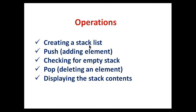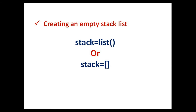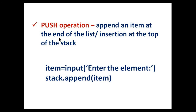The operations we are going to do on a stack list are: creating a stack list, push (that is adding an element), checking for empty stack, pop (that is deleting an element), and displaying the stack contents. You can create an empty list either using the list function or you can use empty square brackets. For push operation, append an item at the end of the list, or we can say insertion at the top of the stack. To push an element, first accept that element from the user using the input function. Then use stack.append(item) — the append function adds an item at the end of the list.